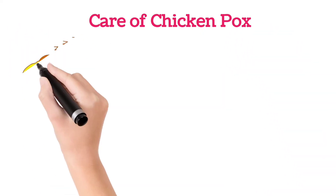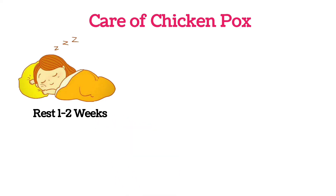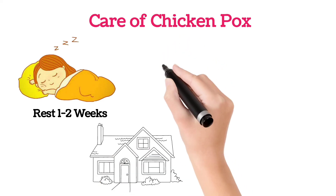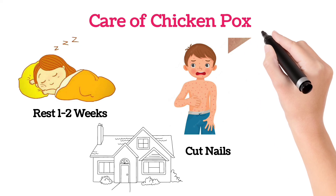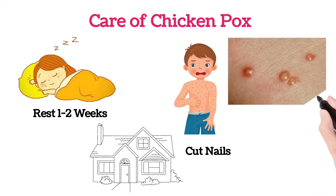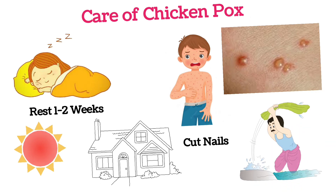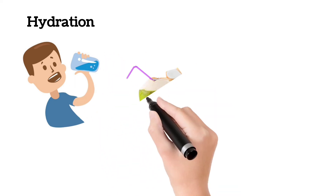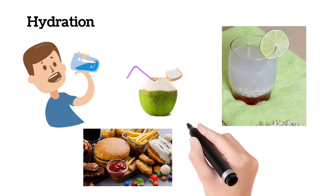Coming to the care of chickenpox: whenever chickenpox occurs, we should take rest for at least 1 to 2 weeks. Since chickenpox spreads easily, isolation in a separate room is necessary. We should not scratch; we should cut our nails to reduce irritation, and we should not pop the vesicles. We should also avoid sunlight and wash our clothes in hot water. We should hydrate ourselves by drinking water, coconut water, buttermilk, etc., and avoid oily and spicy foods.